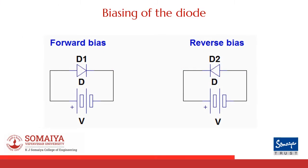Before beginning with the analysis, let's revise the biasing conditions for the diode. The diode is said to be forward biased if the anode of the diode is connected to the positive plate of the battery and the cathode of the diode is connected to the negative plate of the battery.